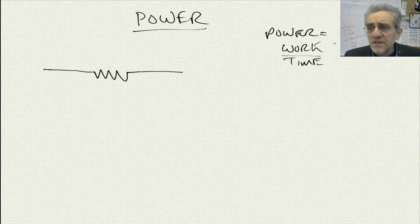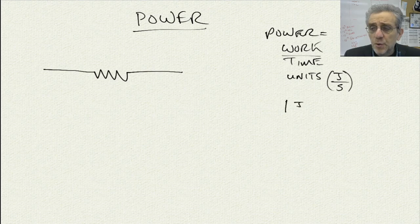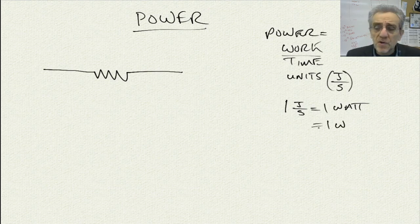And the units of this are joules per second. Now, you can also write that one joule per second is equal to one watt. So we write that like that. So a watt is a joule per second.